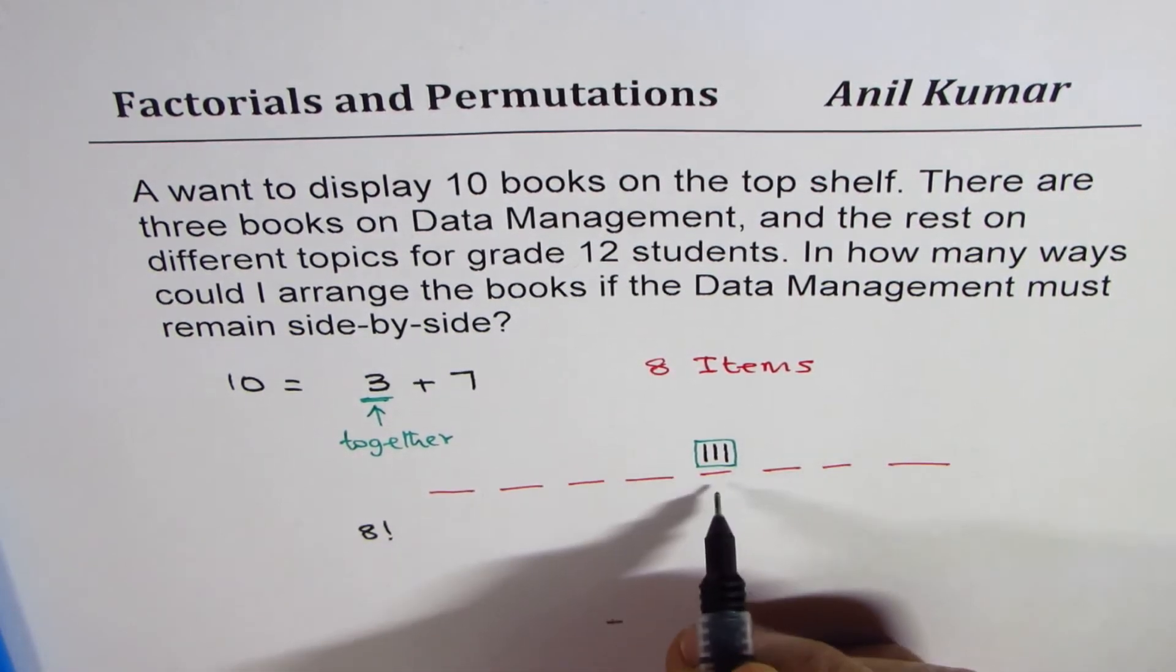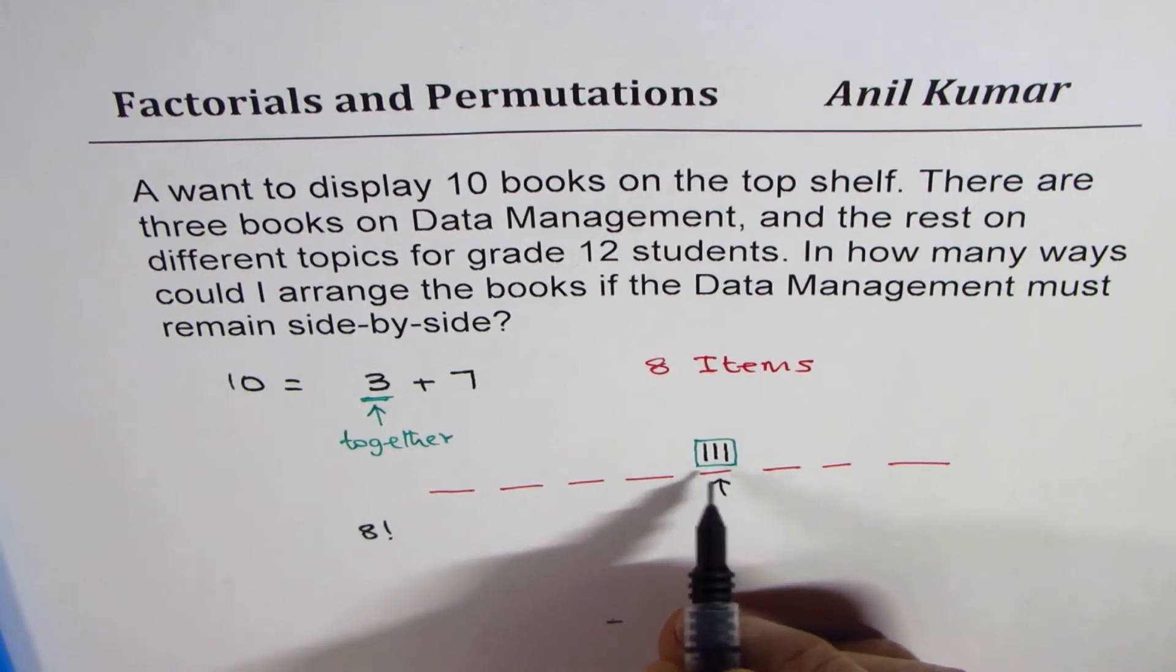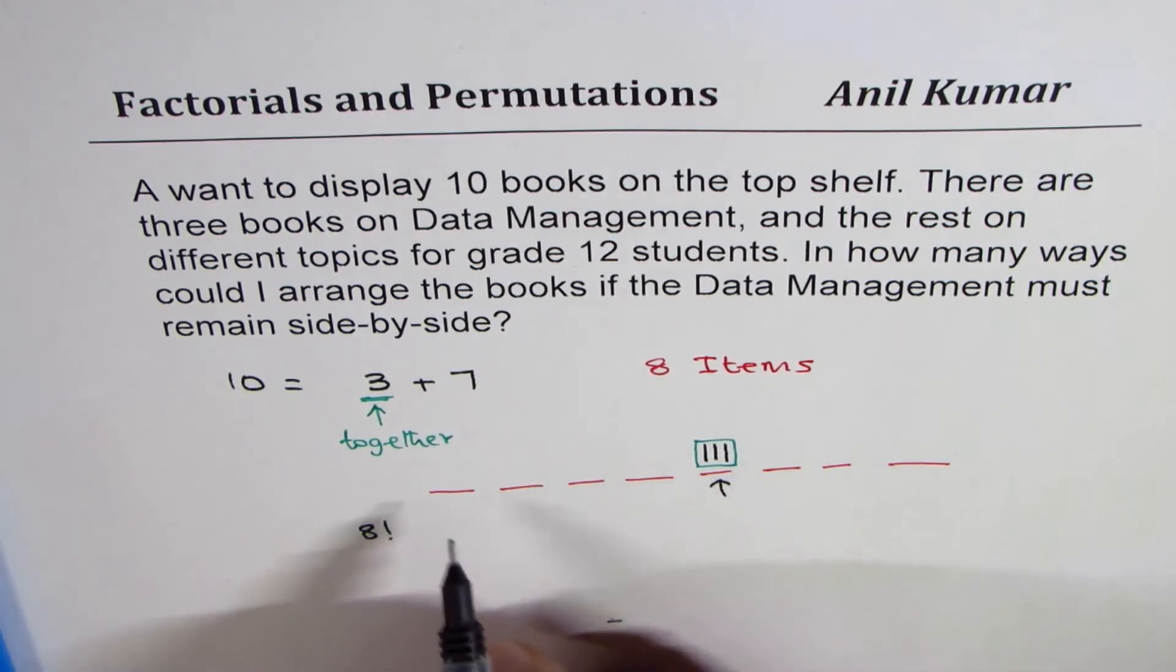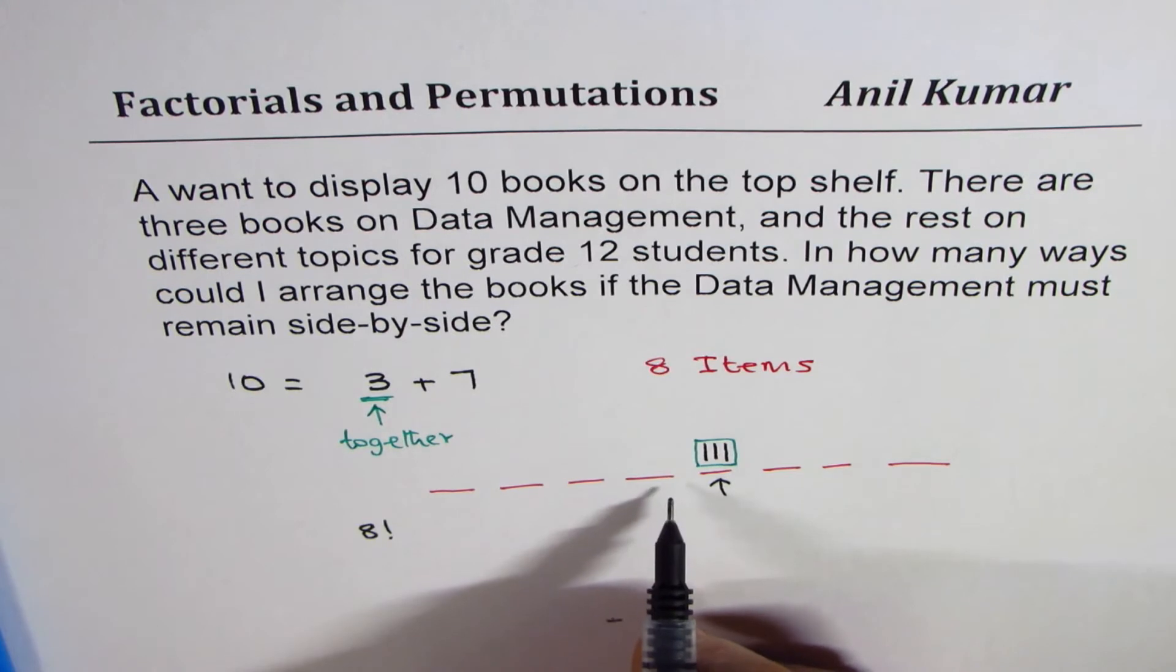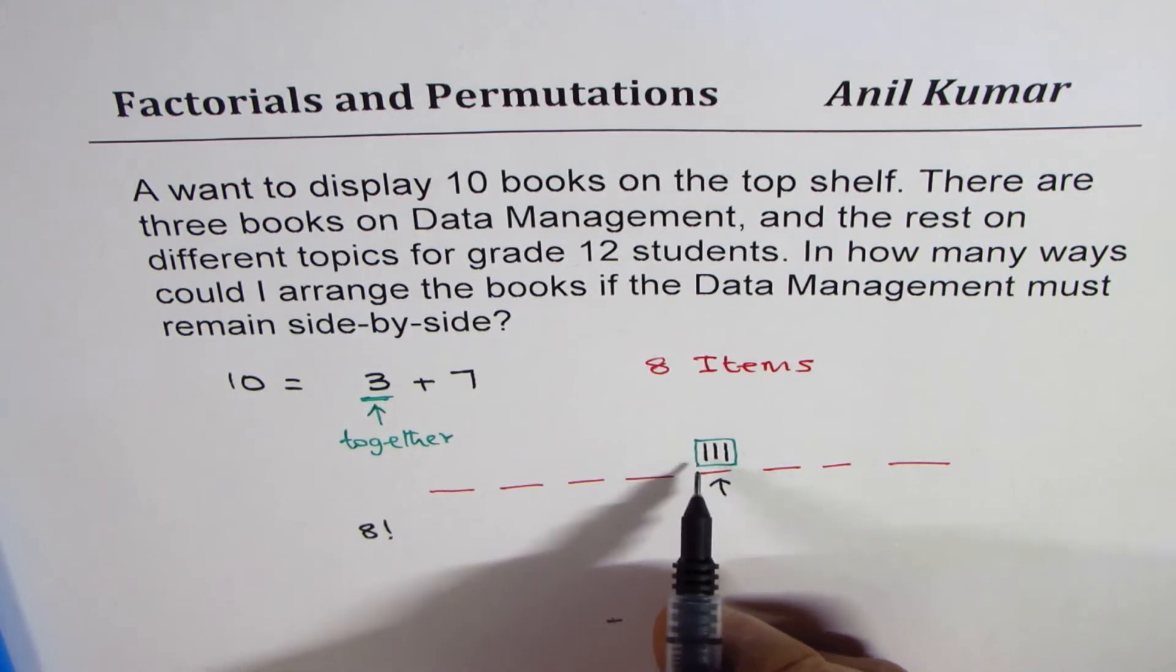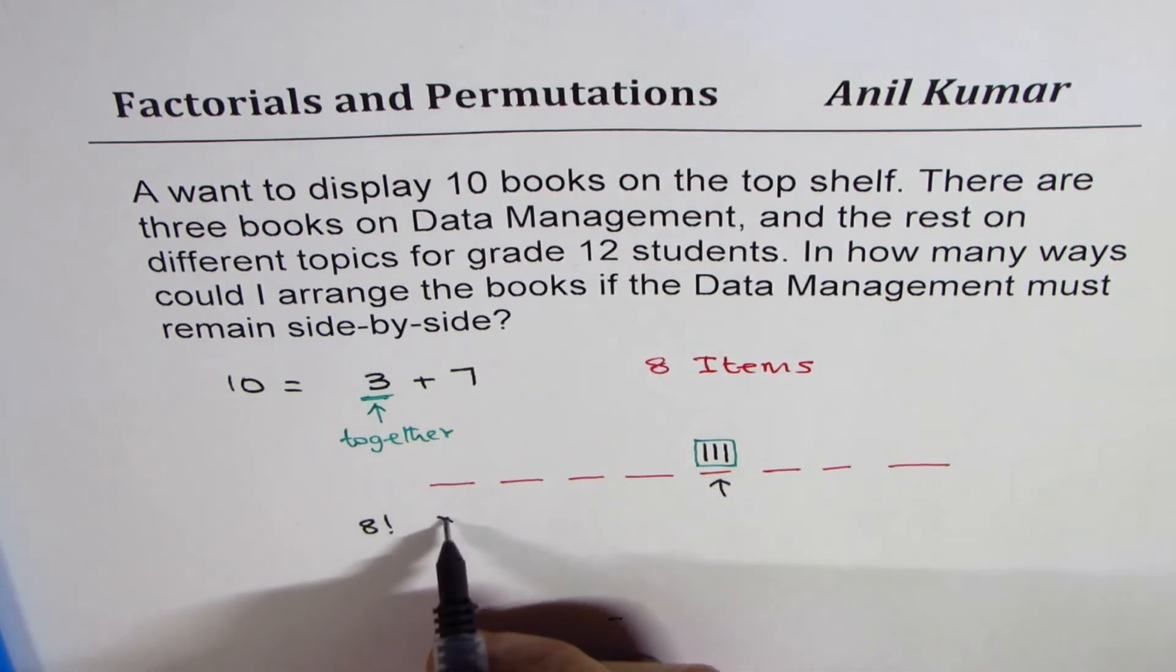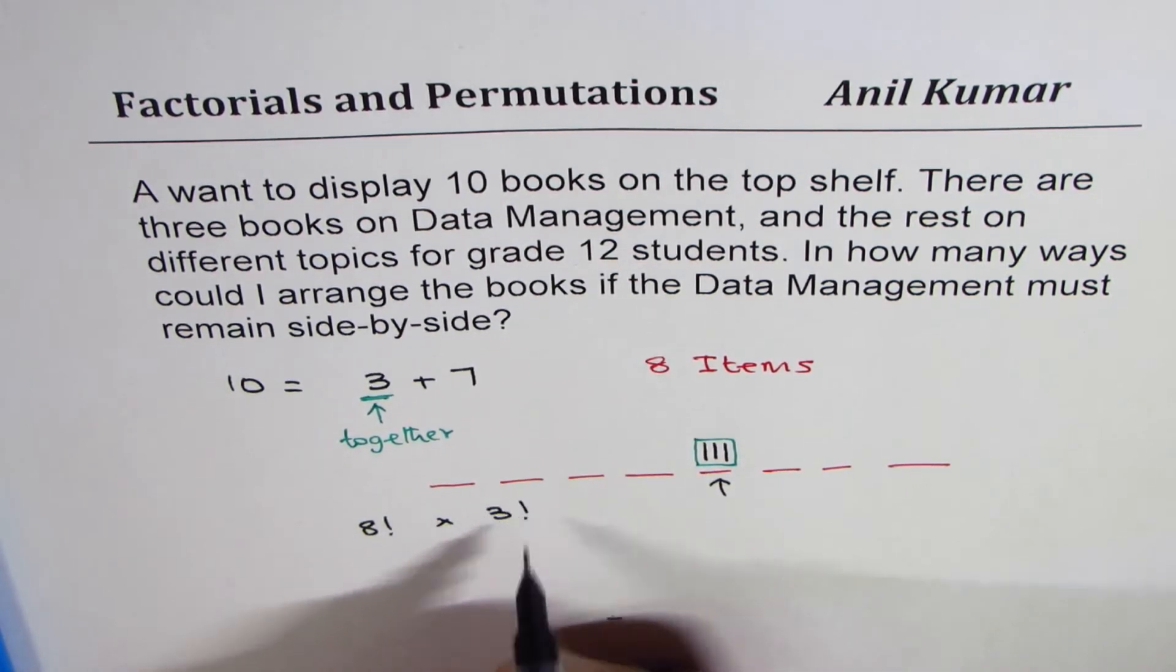Out of these arrangements, in one arrangement, we have three books. For each of these 8 arrangements, how many different ways will be for these books' different orders? Since there are 3 books, it will be multiplied by 3 factorial.